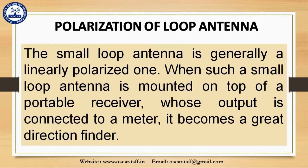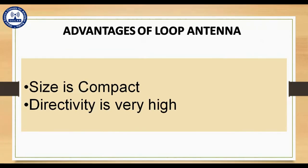Regarding polarization of loop antenna: the small loop antenna is generally linearly polarized. When such a small loop antenna is mounted on top of a portable receiver whose output is connected to a meter, it becomes a great direction finder. The polarization of the loop antenna will be vertical or horizontally polarized depending upon the feed position — vertical polarization is given at the center of the vertical side, while horizontal polarization is given at the center of the horizontal side, depending upon the shape of the loop antenna.